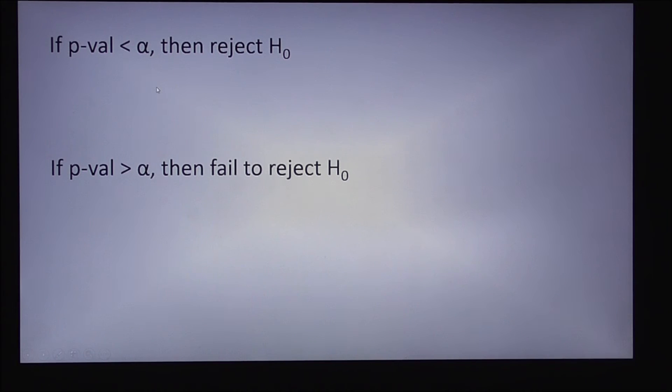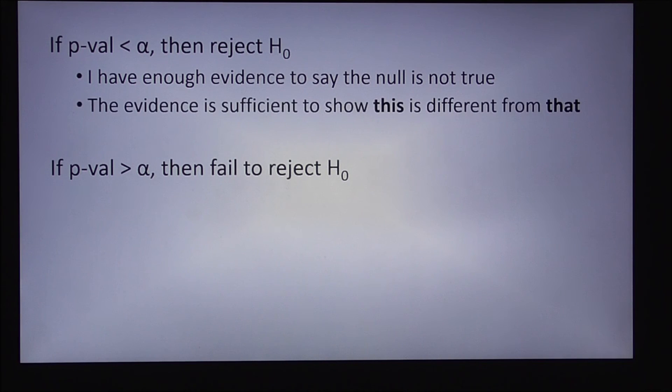One more thing I want to talk about is if p-value is less than alpha, then I'm going to reject H naught, or the null hypothesis. This is the same thing as saying I have enough evidence to say the null is not true, or the evidence is sufficient to show that this is different from that. This and that being part of the null hypothesis verbiage, of course.